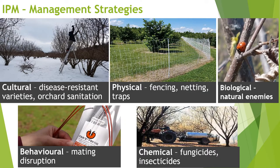Management strategies are generally grouped into five categories depending on their goal. The first would be cultural practices — the manipulation of the environment to make it less attractive to pests. We've already talked about disease-resistant varieties, which is a cultural control. There's also orchard sanitation, such as pruning out diseased limbs that might have cankers from fungal or bacterial diseases and getting them out of the orchard before they can sporulate and spread to healthy trees.